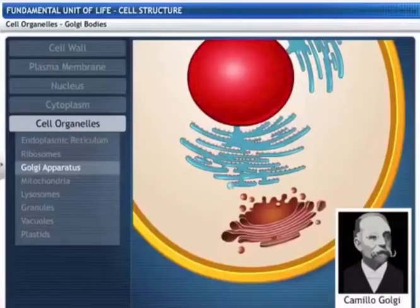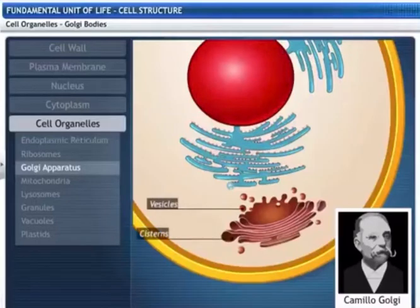Named after Camillo Golgi, who first described it, Golgi apparatus are stacks of flattened membrane-bound sacs, or vesicles. These stacks are called cisterns.